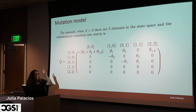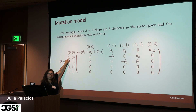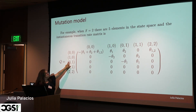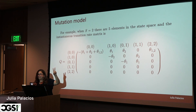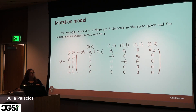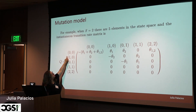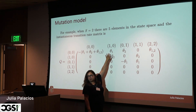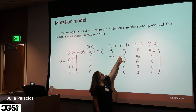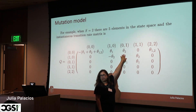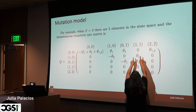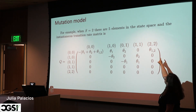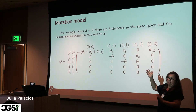For an example with two target sites, the possible states are (0,0), (1,0), (0,1), (1,1), and (2,2). From state (0,0) you can go to (1,0) with rate λ₁, or have a mutation in the other site with rate λ₂. You cannot mutate two sites simultaneously in one step, but you can have a simultaneous cut with a different rate θ₁₂. That's all we need to specify our model.